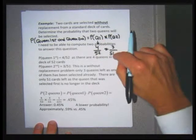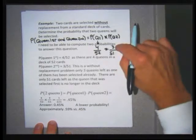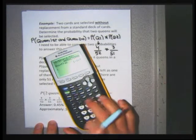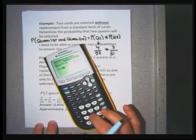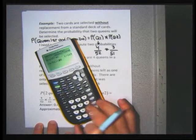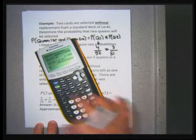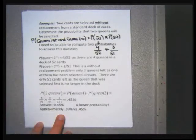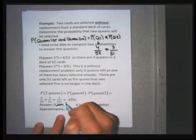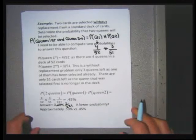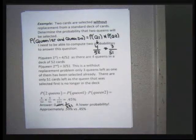So there are only 51 cards left. Using my calculator: (4/52) × (3/51), then math, enter, enter — I get 1 over 221. I did it as a percent, but we'll keep our answers in reduced fractions, so the answer is 1 over 221.